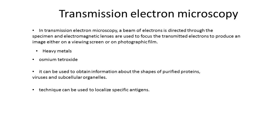When viewed in the electron microscope, small dark spots due to the gold particles are seen in the image wherever an antibody molecule has bound to its antigen, and so the technique can be used to localize specific antigens.